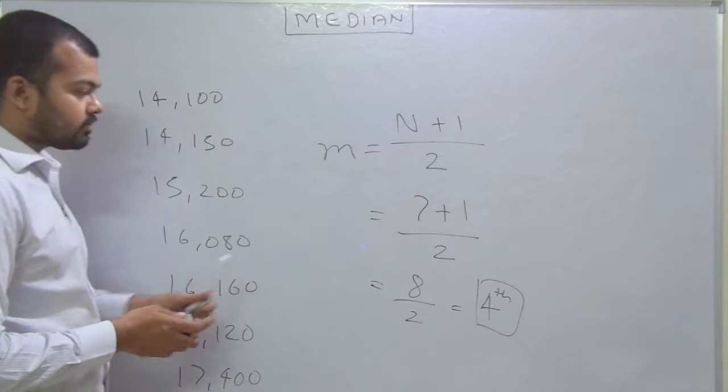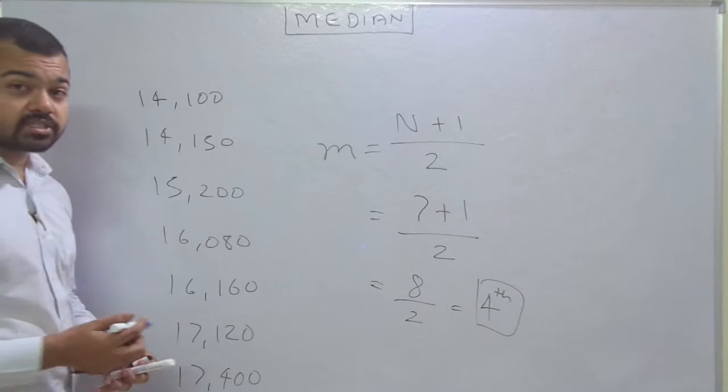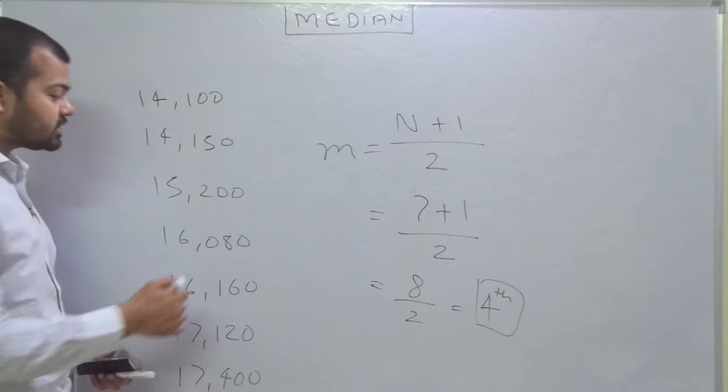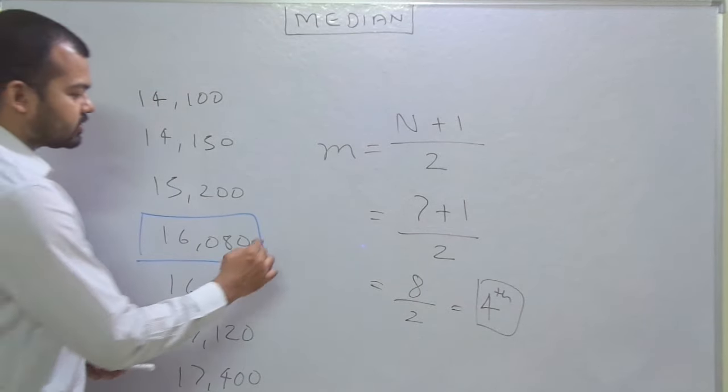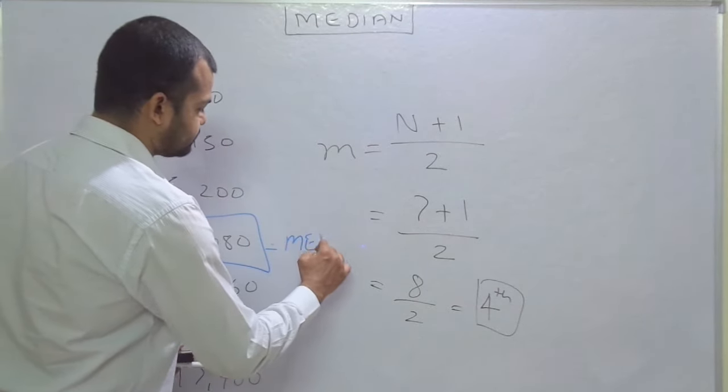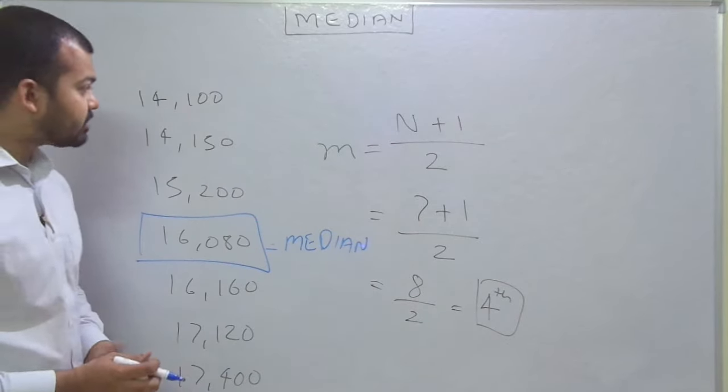When we are calculating the fourth value in this series that is arranged in ascending order: one, two, three, four. So 16,080 is your median. This is a very simple method for individual series when dealing with median.